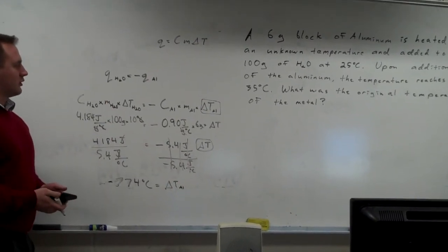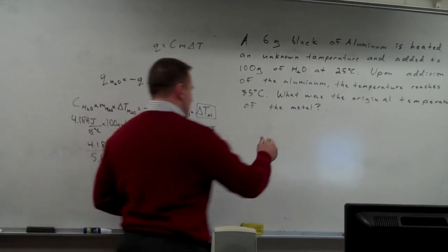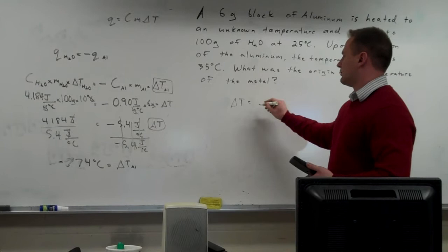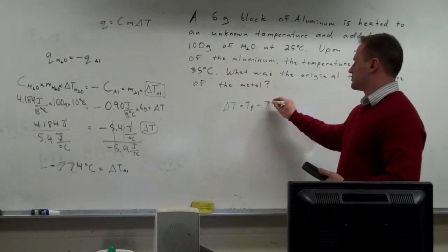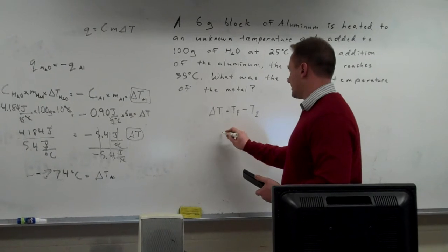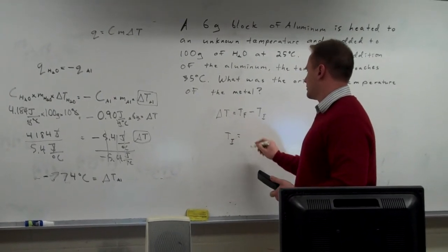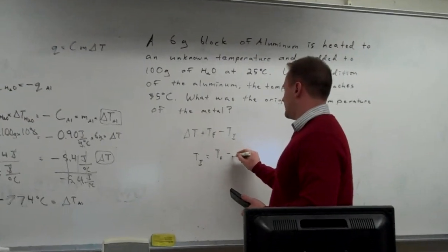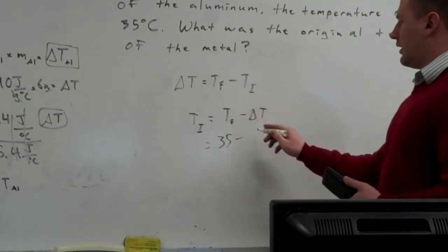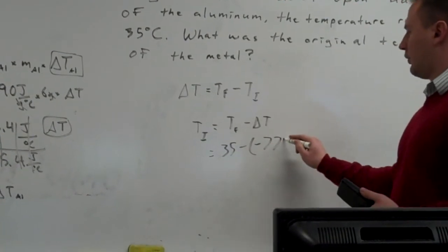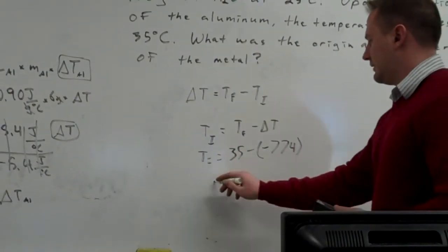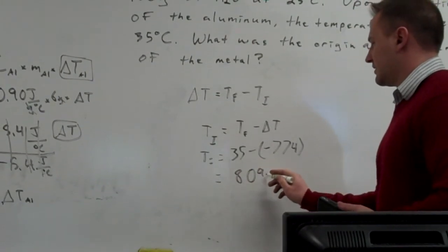To figure out the temperature the aluminum originally was, we use the fact that the final temperature is 35 degrees. Since the change in temperature equals the final temperature minus the initial, we rearrange to solve for the initial temperature: T_initial equals the final temperature minus the change. The final temperature was 35, and our change in temperature was negative 774, so our initial temperature is 35 minus negative 774, which equals 809 degrees Celsius — that was the original temperature of the aluminum.